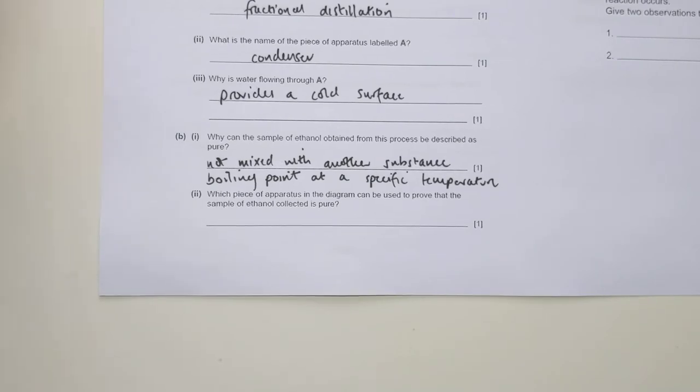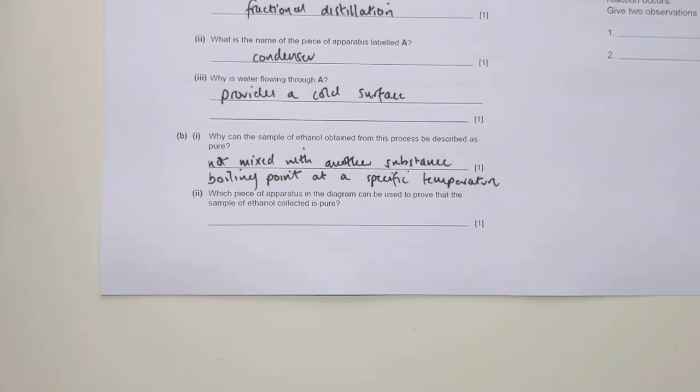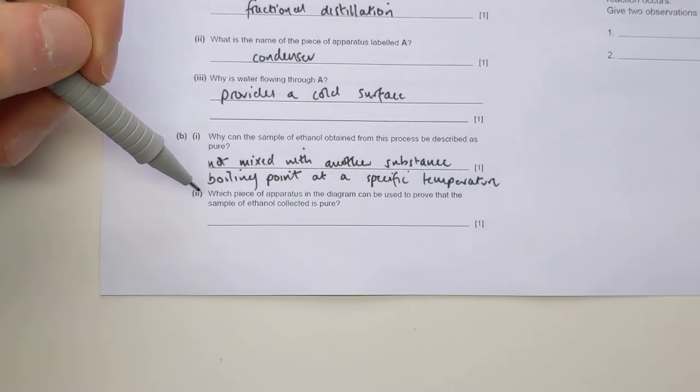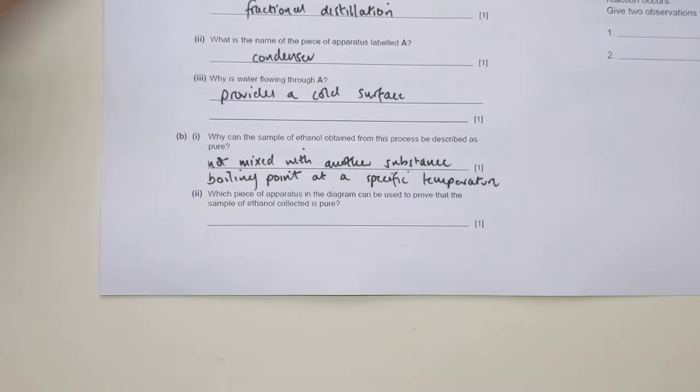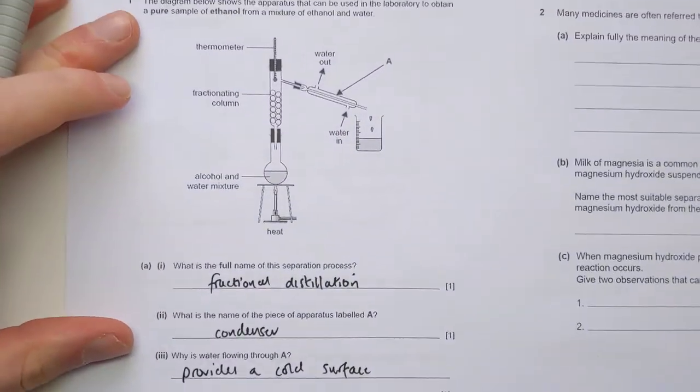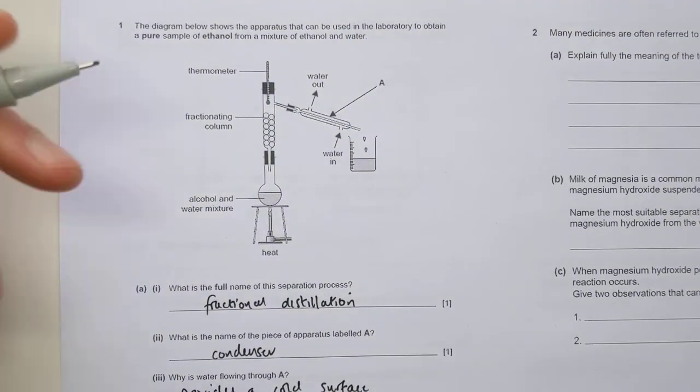Which piece of apparatus in the diagram can be used to prove that the sample of ethanol collected is pure? Again, that goes with the previous question. If something being pure means it boils at a specific temperature, we need something to measure that temperature. The thing that measures that temperature in the apparatus is obviously the thermometer.